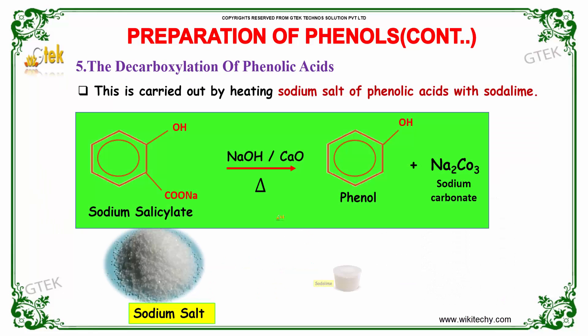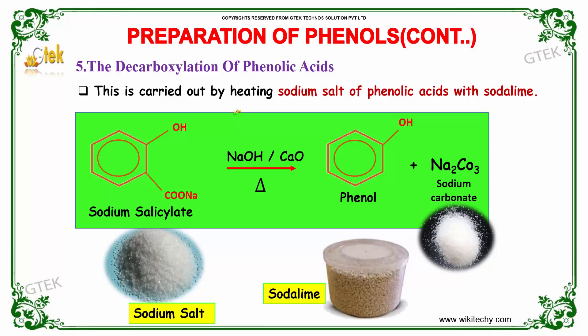Let us now discuss the decarboxylation of phenolic acids. This is carried out by heating the sodium salt of phenolic acids with soda lime. Taking sodium salicylate as an example: when heated with sodium hydroxide along with calcium oxide, we obtain phenol along with sodium carbonate.